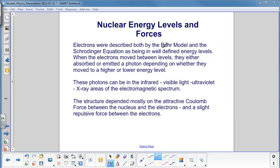Electrons were described by both the Bohr model and the Schrodinger equation as being in well-defined energy levels. When the electrons moved between levels, they either absorbed or emitted a photon, depending on whether they moved to a higher or lower energy level.